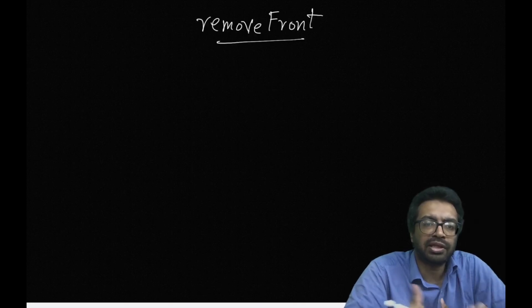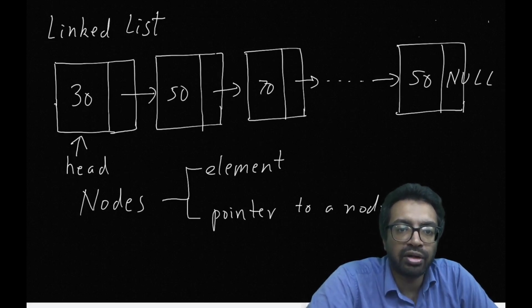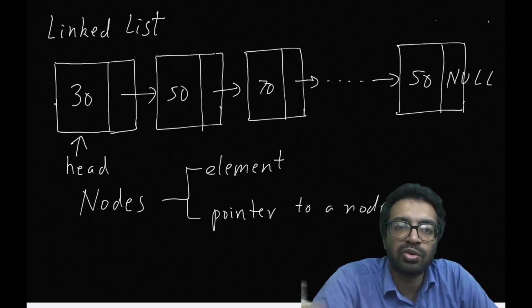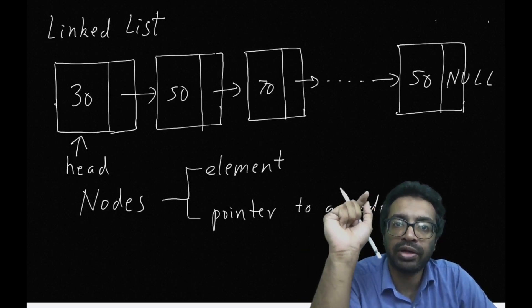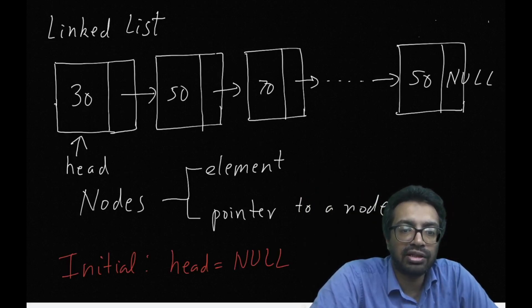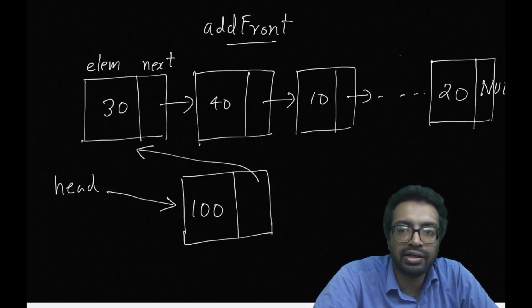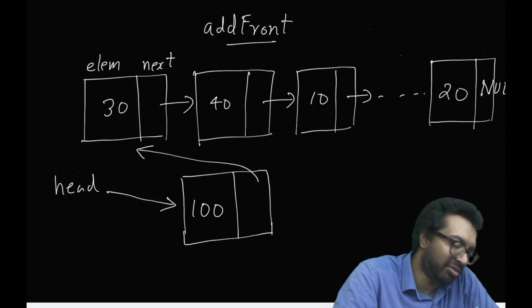The next thing we are interested in is remove front — removing the front node. One thing we have to ask is how will this list look when there is no element in it. In the initial setting there is not going to be any node, and in that case head is assigned the value null. When there is no element in the list, head is going to be null. Now we need to ask: why did we move from an array implementation to a linked list implementation?